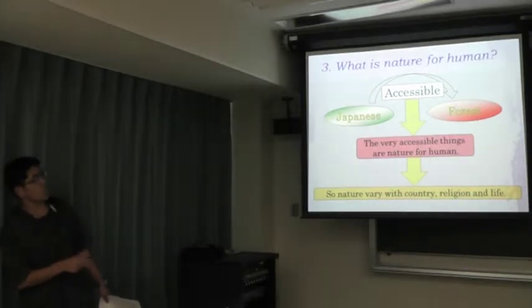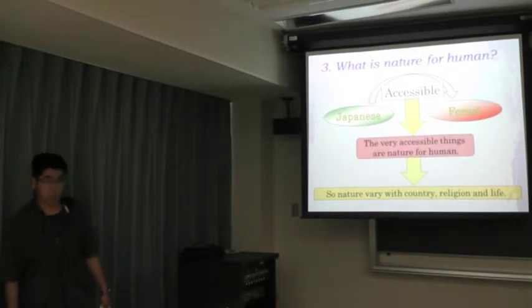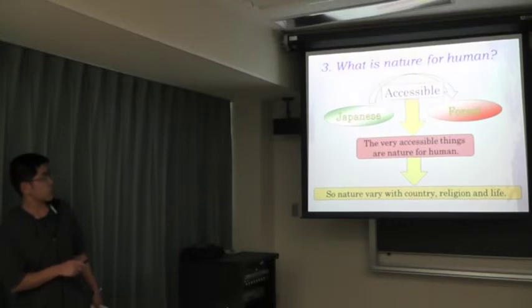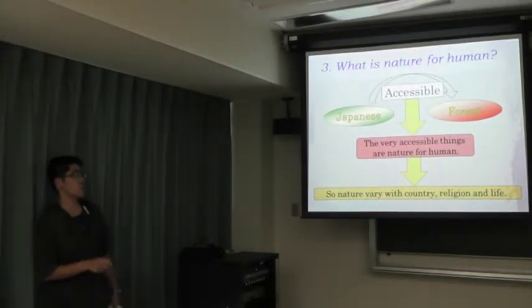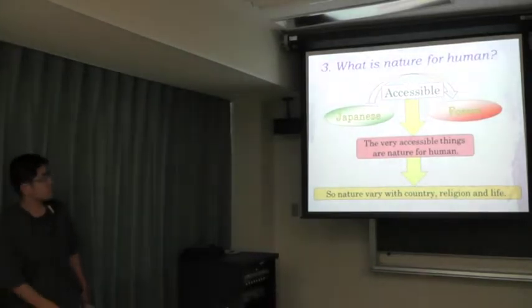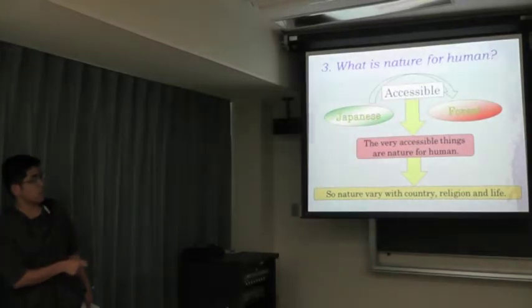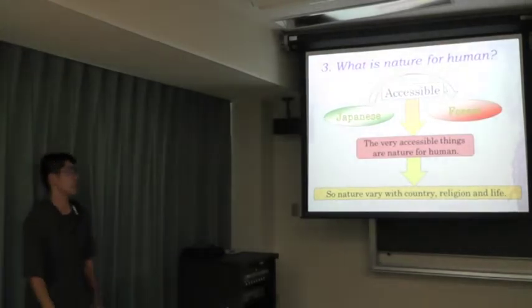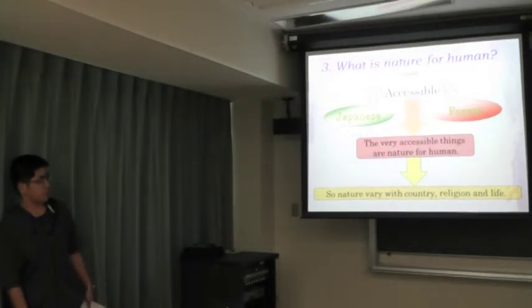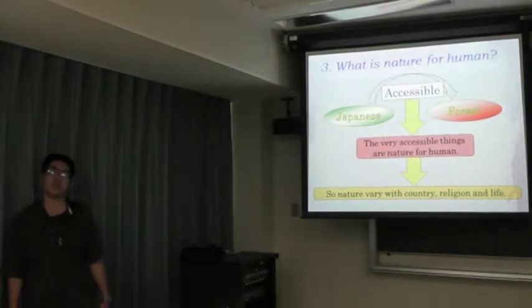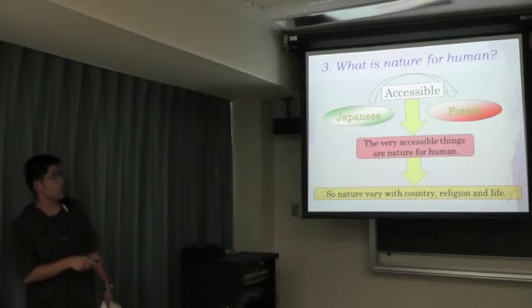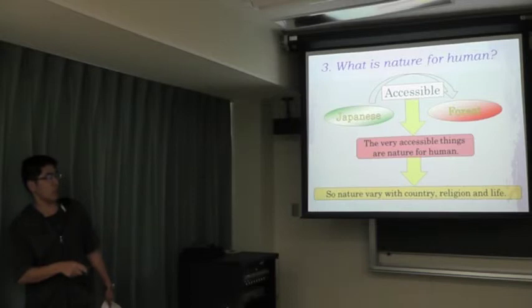And so, what is nature for humans? From the previous slide, for Japanese people, nature is forest because it is accessible. In other words, very accessible things that are close to the area are nature for humans. Nature is not the same or equal for all humans. Nature varies with country, religion, and life.